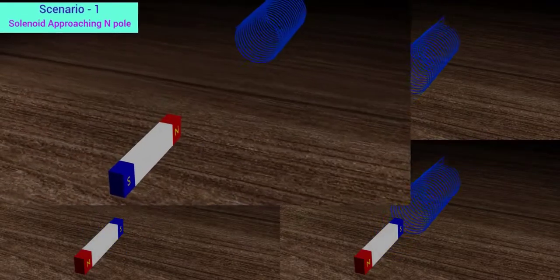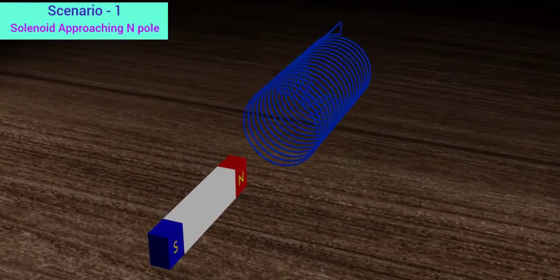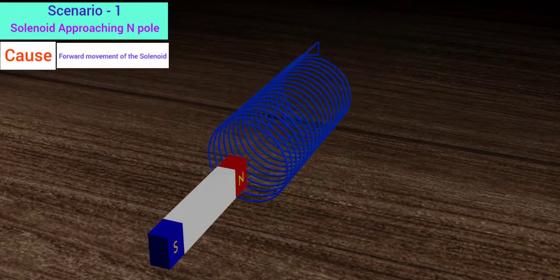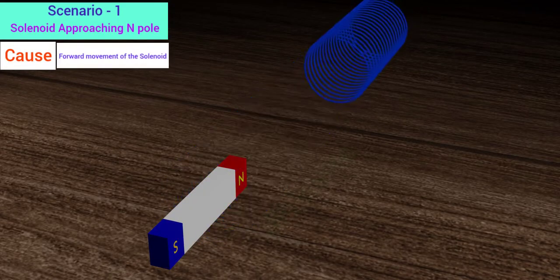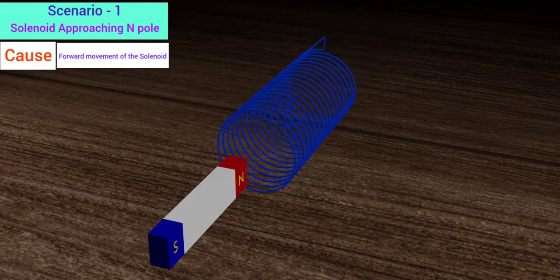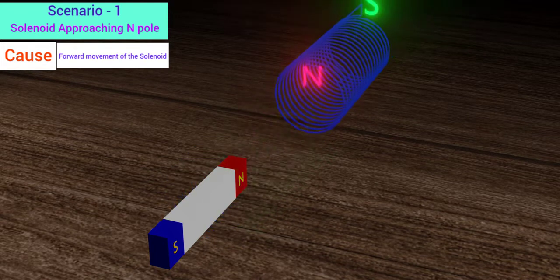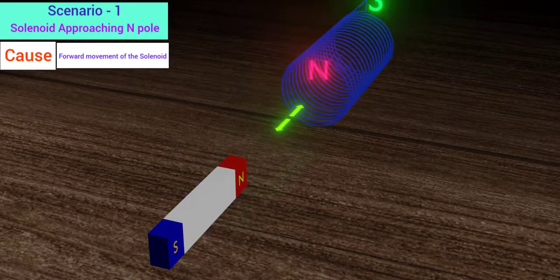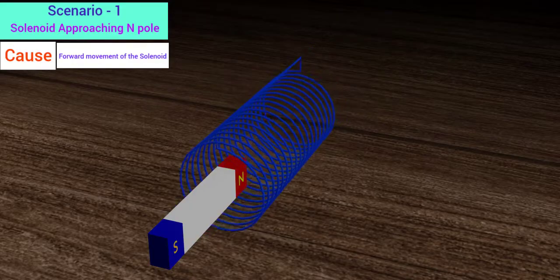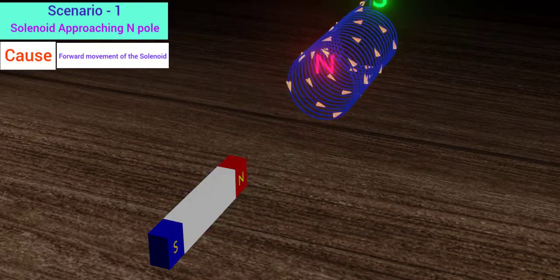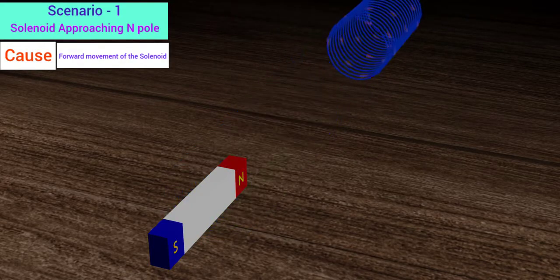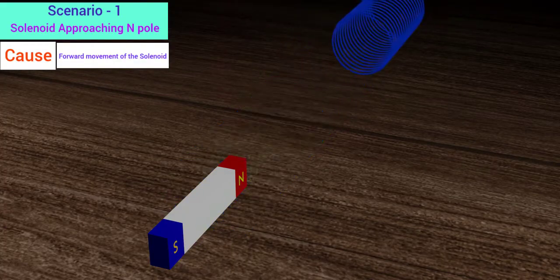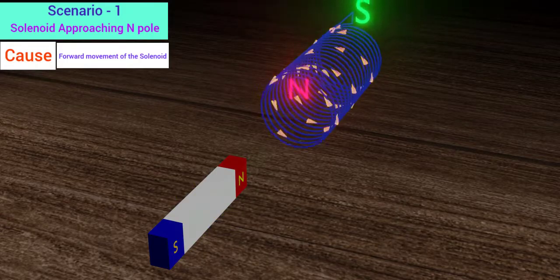Let us see the first situation. Here the solenoid is approaching the north pole. It is the cause of the induction. And the law says the induced current will resist its movement towards the magnet. How does it do so? It will produce a north pole near the permanent magnet, so that the magnetic north pole can repel the north pole of the solenoid. To produce a north pole, it needs to generate a current in anti-clockwise direction. Hence, the cause, the advancement of the solenoid, will be denied. And thus the direction of the current is anti-clockwise.